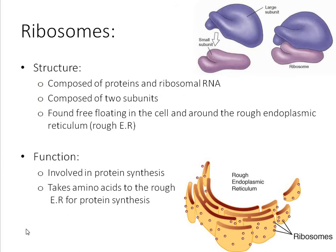Next up, just as we spoke about being produced from the nucleolus, we've got ribosomes. Ribosomes are very important throughout the cell. Structurally, they are composed of proteins and ribosomal RNA. Just understand that they're composed of both proteins and RNA. They are composed of two key subunits — a small and a large — and are found free-floating around the cell and around the rough endoplasmic reticulum — hint, hint about what we might be covering next.